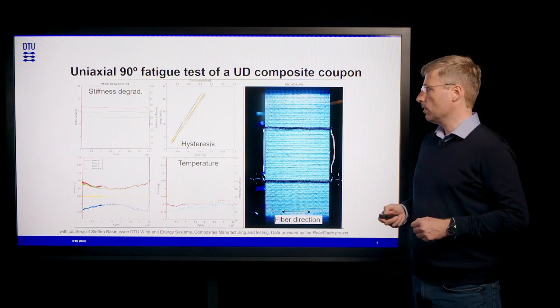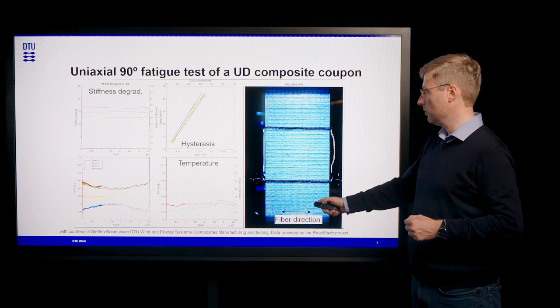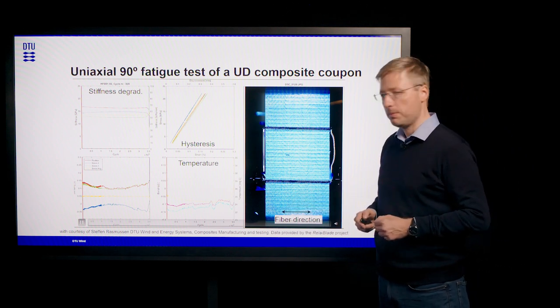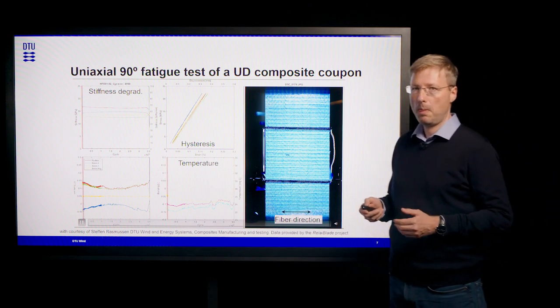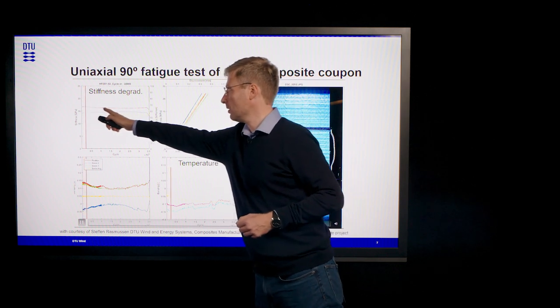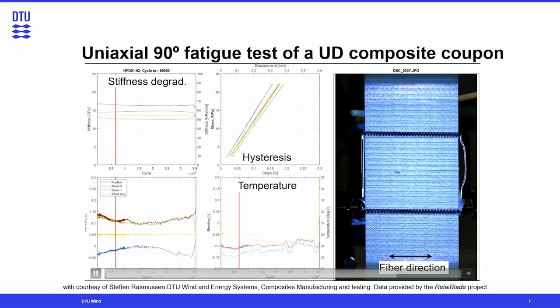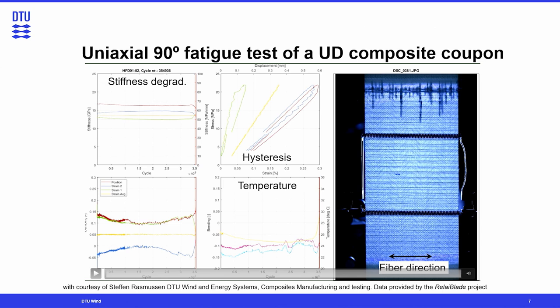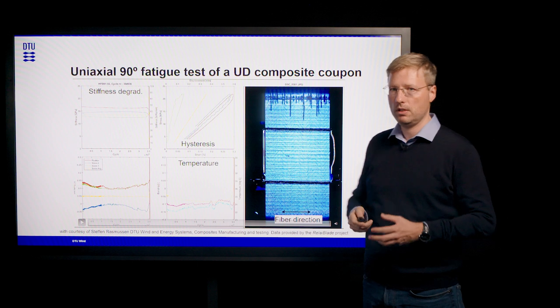On this slide you see an example of such a test. We see a coupon made from fiber composite material where the fibers are oriented in the horizontal direction, meaning perpendicular to the loading direction, which is vertical. You can see the stiffness degradation of the coupon, the hysteresis, and we also record temperature during testing to make sure the specimen doesn't heat up too much. The insidious thing about fatigue is that you don't see anything happening, and when it does happen it occurs very rapidly — until we have the final crack when the specimen fails.